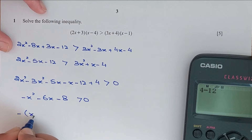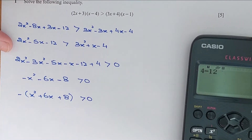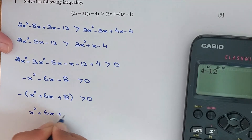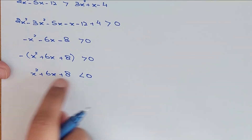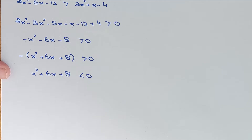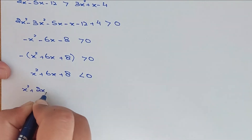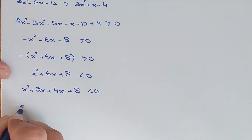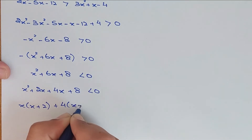Taking the negative sign common: x squared plus 6x plus 8 is greater than 0. Multiplying by the negative sign we have to reverse the inequality, so x squared plus 6x plus 8 is less than 0. This is a quadratic equation, let me factorize. 1 times 8 is 8, and 2 times 4 is 8, and 2 plus 4 would be 6. So x squared plus 2x plus 4x plus 8 is less than 0. x is common — factor is x plus 2. Plus 4 is common — factor is x plus 2.